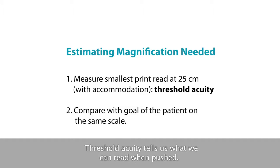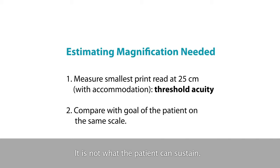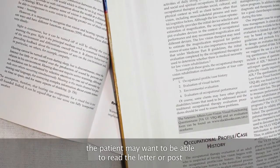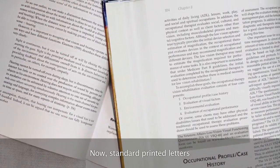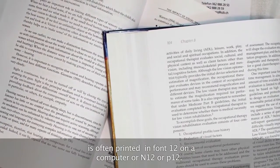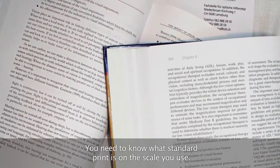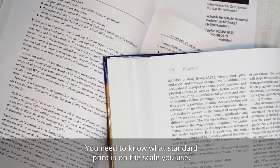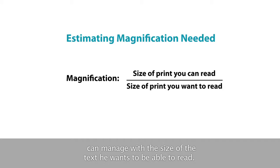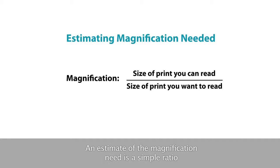Threshold acuity tells us what the patient can read when pushed — it's not what they can sustain. Using the goals set in your assessment of need, choose one of the problems you're going to solve. For example, the patient may want to read letters that come through the door. Standard print in letters is often font 12, or N12/P12 on reading scales. You then compare the measured size the patient can manage with the size they want to read, and the estimated magnification needed is a simple ratio between these two numbers.